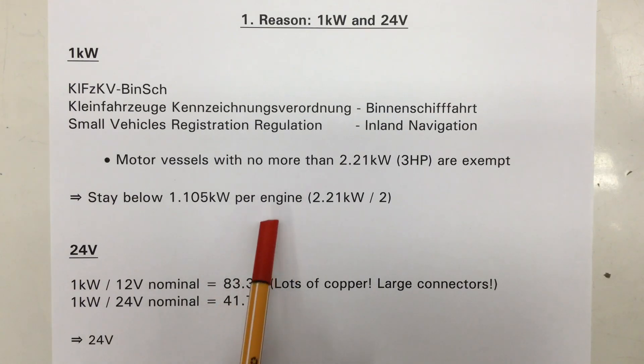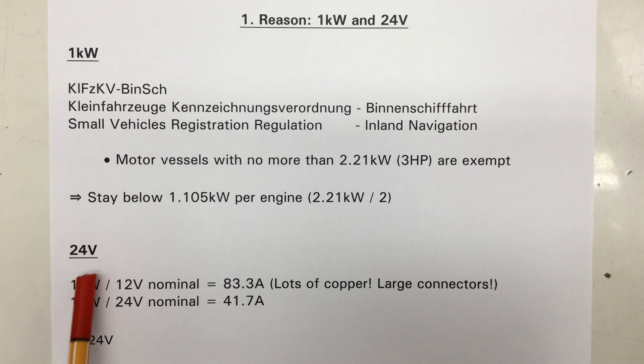And so my conclusion was to stay below 1.105 kilowatt per engine. Remember, I will use two of those on my little dingy. The decision to go with 24 volts was a no-brainer. If you have a 1 kilowatt motor that runs at nominal 12 volts, you need to supply 83.3 amps to it. That's a lot of copper in the conductors and some large connectors. And you can halve that amperage to 41.7 amps simply by increasing the voltage to 24 volts. So, 24 volts it was.